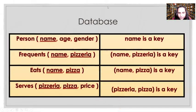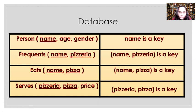I'll begin by explaining the database I am going to use in this video for all the questions included. This contains four tables and we are going to do this slightly differently from the previous four videos. I am just going to explain the tables and the columns they contain — there is no data given. The four tables are person, frequent, eats, and serves.